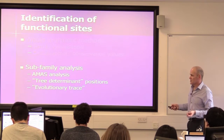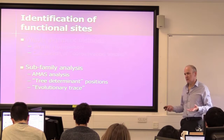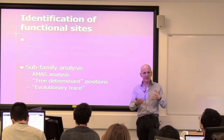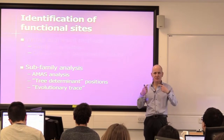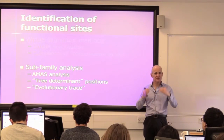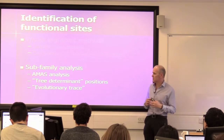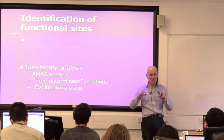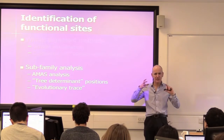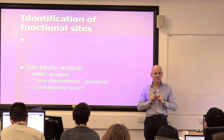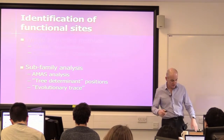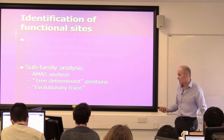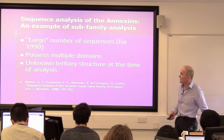There are related methods called tree determinant positions. The idea there is: if you take a multiple alignment and calculate a tree from it - an evolutionary tree - there are certain positions that are more informative than others in the alignment, that capture more of the variability across the sequences. Those positions are going to tell you the differences and similarities between the sequences. There's a method called evolutionary trace developed by Oliver Lichtarge which does this kind of thing.